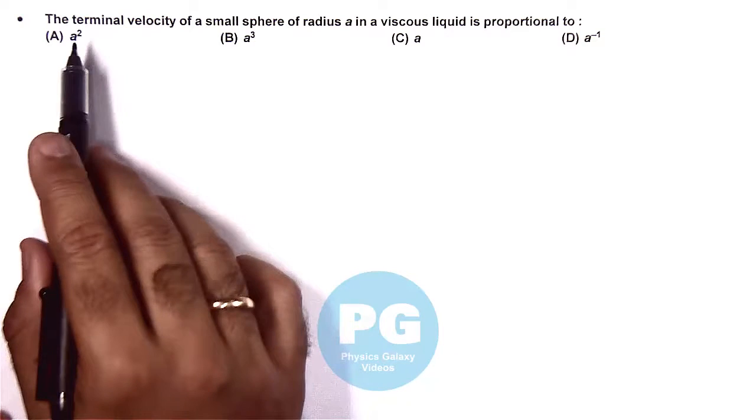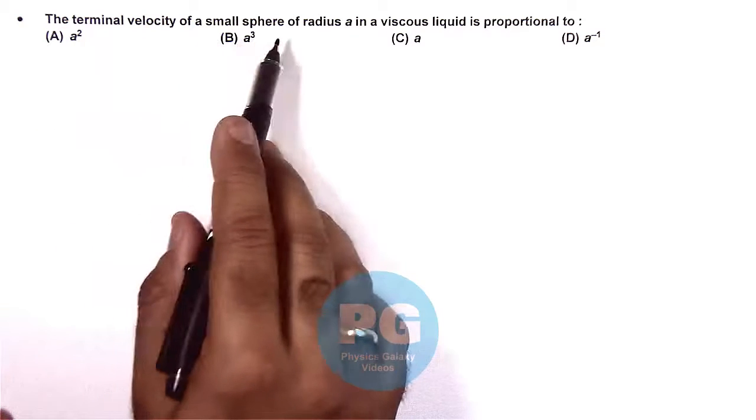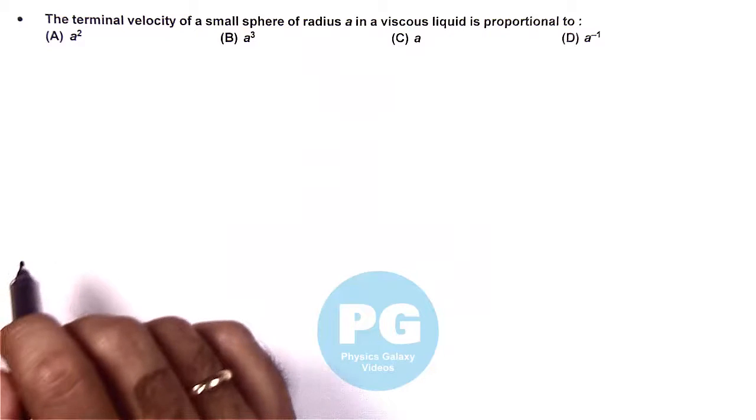In this question, it is asking that terminal velocity of a small sphere of radius A in a viscous liquid is proportional to.